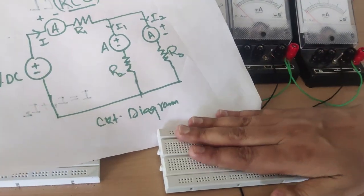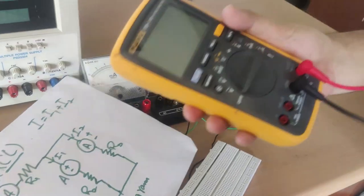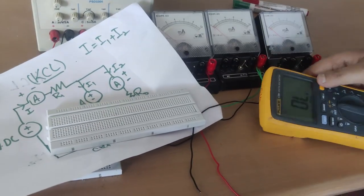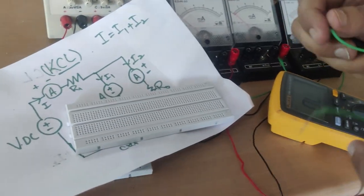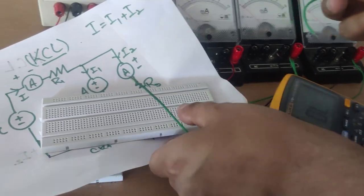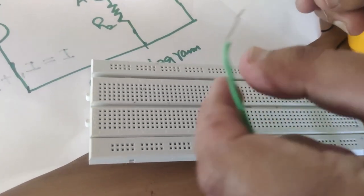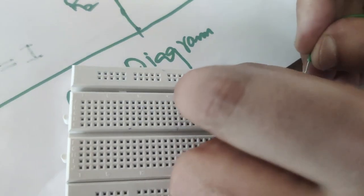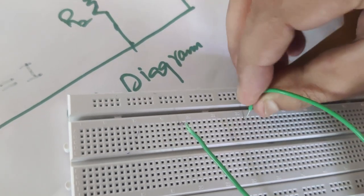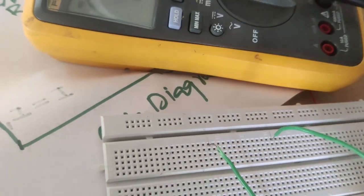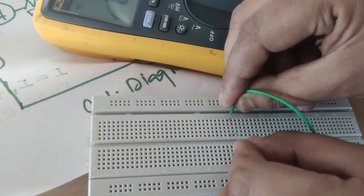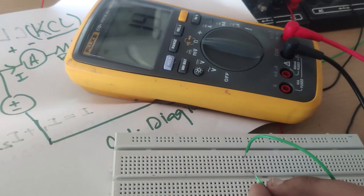You don't need to memorize the breadboard layout. Just use the multimeter — set the knob to continuity mode. I have two leads, black and red. If I short these two lines, it gives a beep sound. Similarly, I will check which lines are shorted. When I connect horizontally, the multimeter gives no beep, meaning horizontal lines are not shorted. When I connect vertically, the beep sounds — so the lines are shorted vertically.